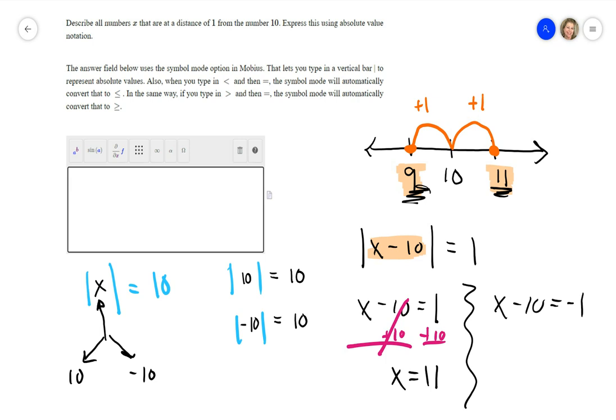Over here, same thing. I'd have to add 10 to cancel that out. And what I do to one side, I've got to do to the other. And then, over here, I get x is equal to 9. There's your two answers, 9 and 11.